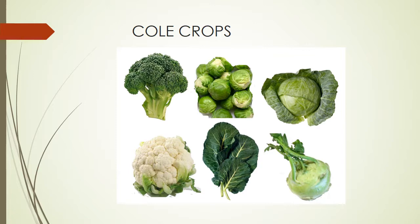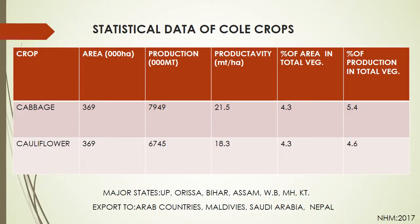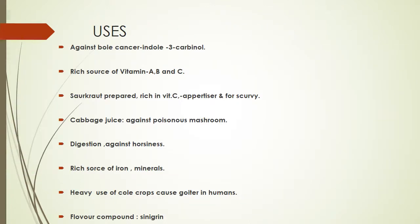Statistical data of area, production and productivity of cabbage and cauliflower is given here. Major states of cole crop growers are Uttar Pradesh, Orissa, Bihar, Assam. Exporters export to Arab countries, Maldives, Saudi Arabia, and Nepal. Uses of cole crop: against bowel cancer — it contains indole-3-carbinol that fights against bowel cancer.